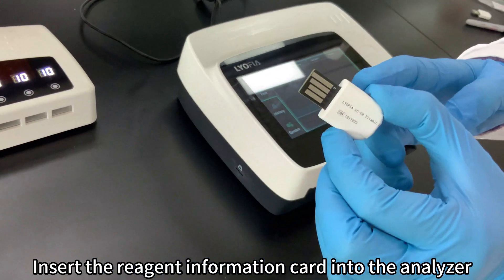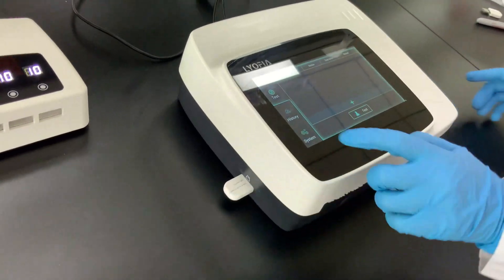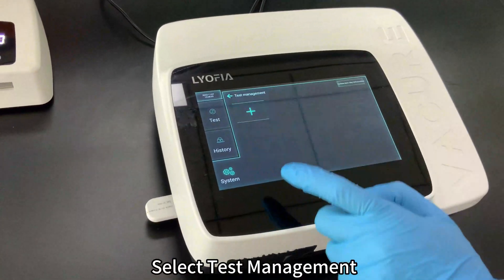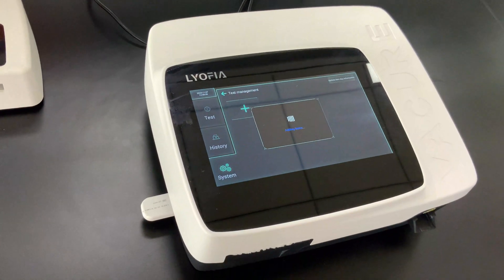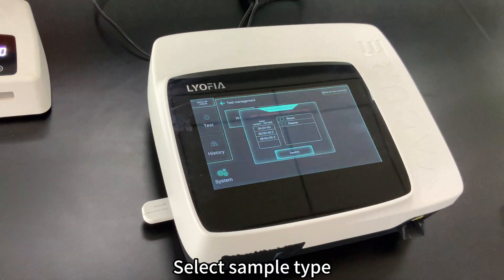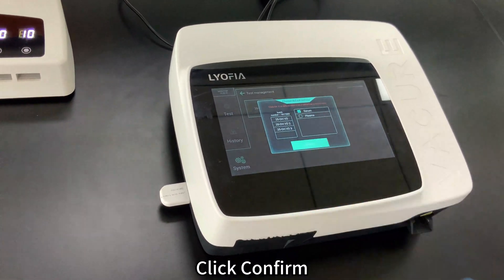Insert the reagent information card into the analyzer. Click System, select Test Management, click Plus, select sample type, then click Confirm Edit.